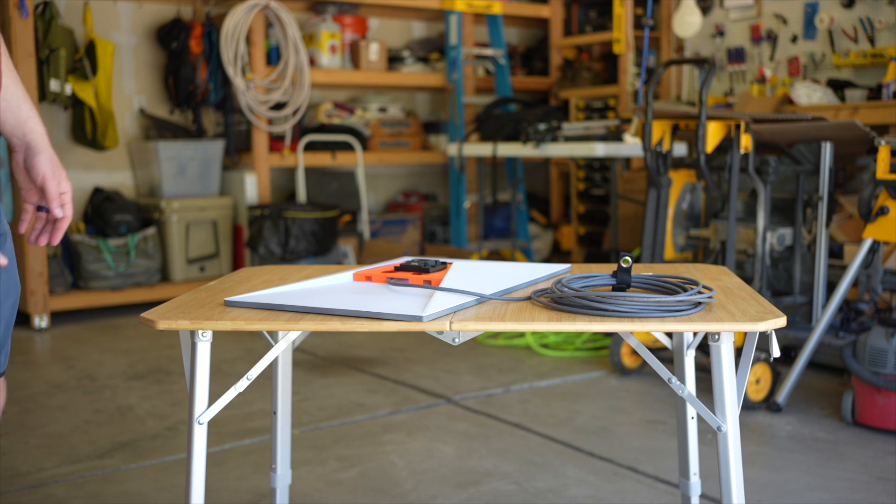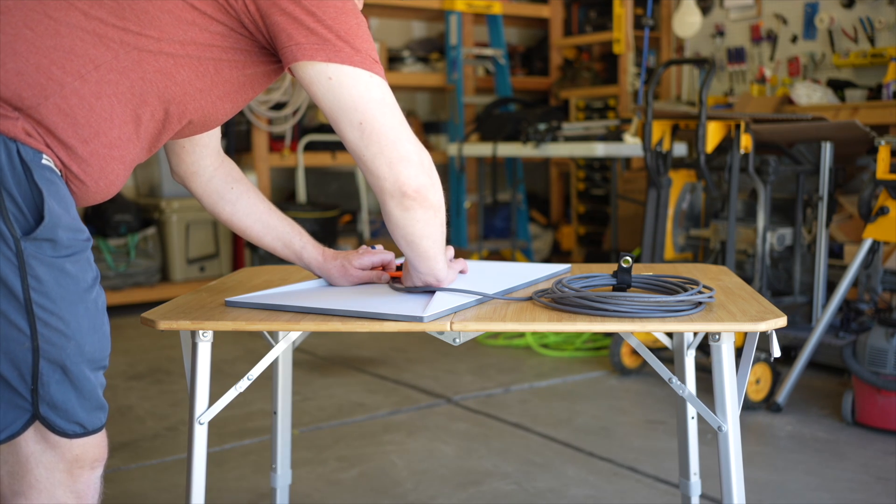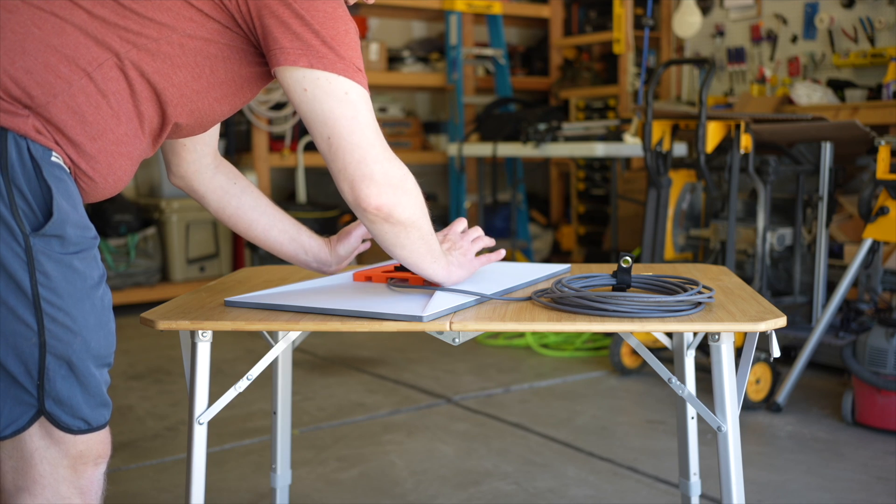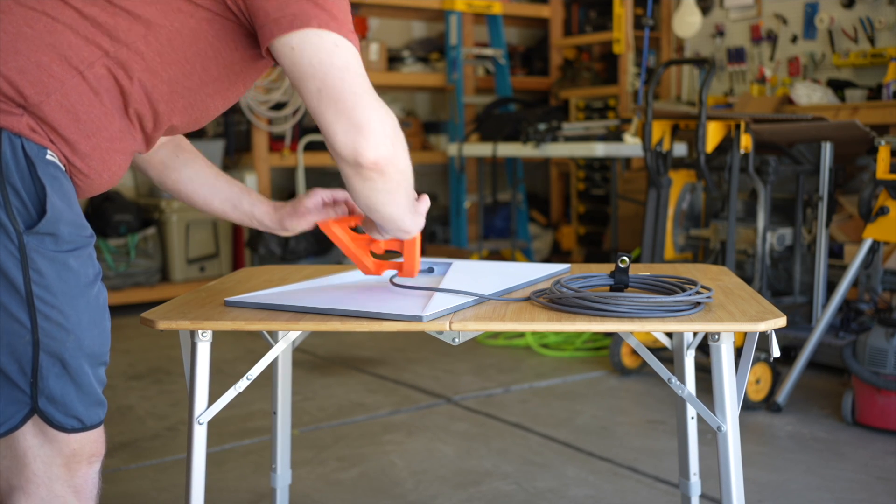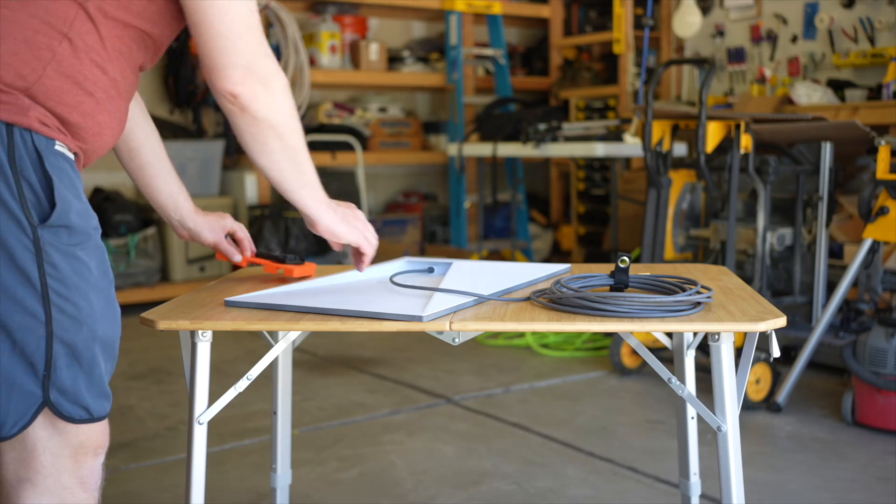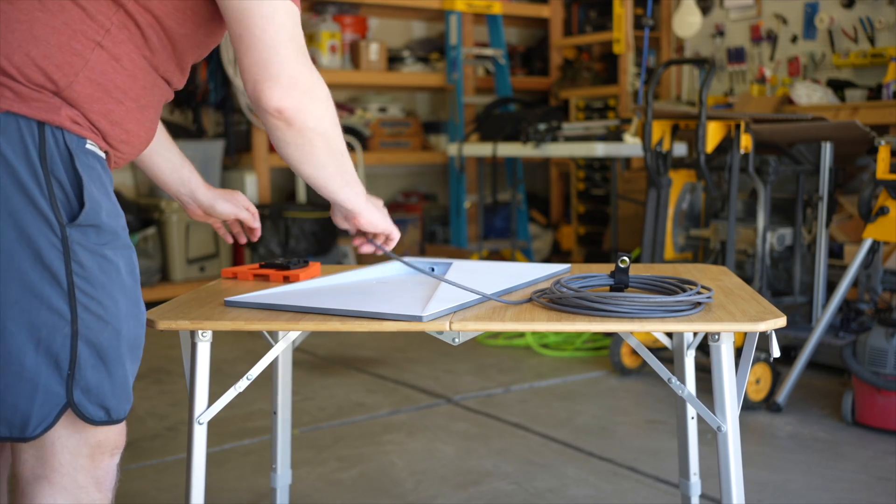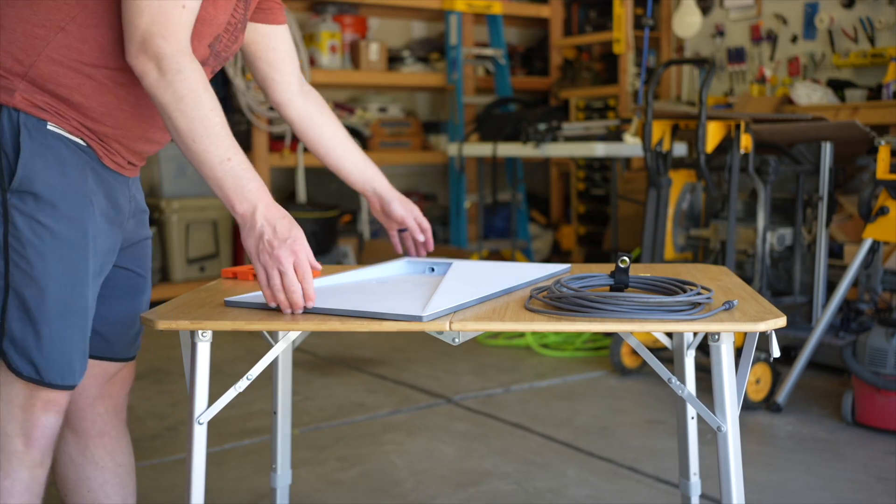When you're ready to remove, again pull up a little bit in the center while placing pressure on the side of your hands, easily comes out. Pull the cable out, you're all set.